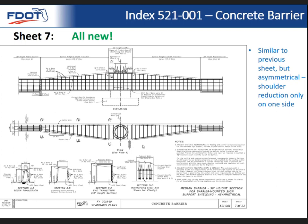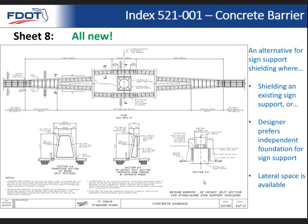This is basically the same thing but asymmetrical — there's a shoulder reduction on one side. As I mentioned, the previous sheet was for the least amount of lateral space. If you do happen to have some lateral space available on your project, some designers may prefer this option where you have an overhead sign support that you're shielding but it's independent of the barrier — you don't put the reinforcing through the barrier; the barrier just basically goes around it. This sheet also applies if you happen to have an existing sign support and just need barriers to go around it.